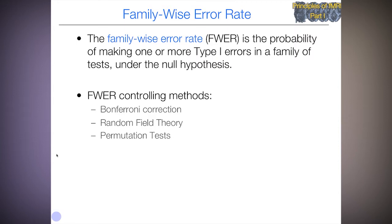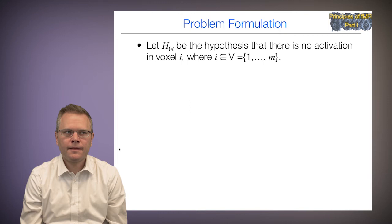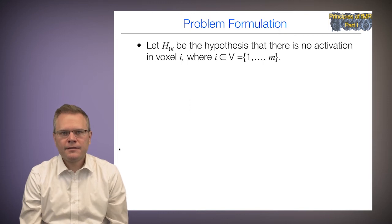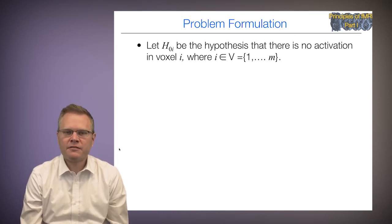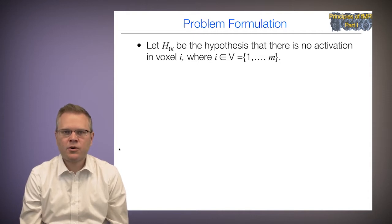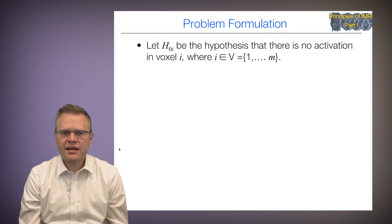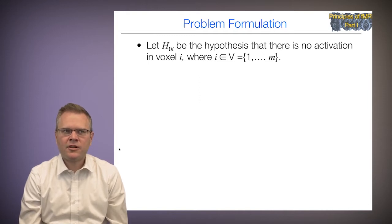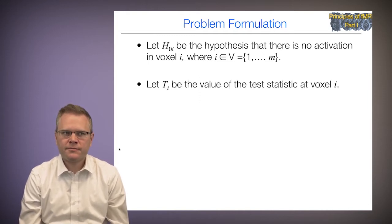In this module, I'll talk about Bonferroni correction and random field theory. Let's let H0(i) be the hypothesis that there's no activation in voxel i, where i can take values from 1 to M, and M is the total number of voxels. So H0(i) is just the voxel-wise null hypothesis of no activation.